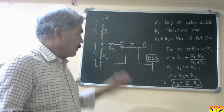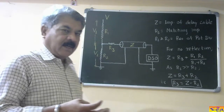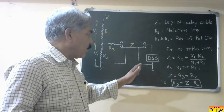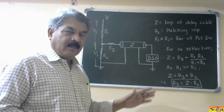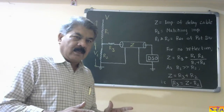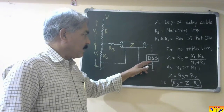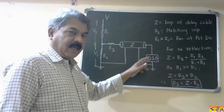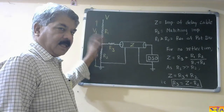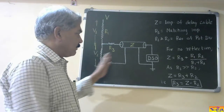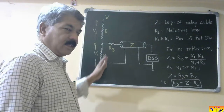So, either this complete assembly — that is impulse generator, test object, and this potential divider — will be in a Faraday cage, and the operating personnel, that is control panel and this DSO, will be outside the Faraday cage. This normally happens in an institutional laboratory. But in some labs, the operating personnel, measuring arrangement — that is digital storage oscilloscope and control panel — are in the Faraday cage, whereas the impulse generator, divider, and test object are outside the Faraday cage. So in both cases, the operating personnel, control panel, and DSO are far away from this high voltage test setup.